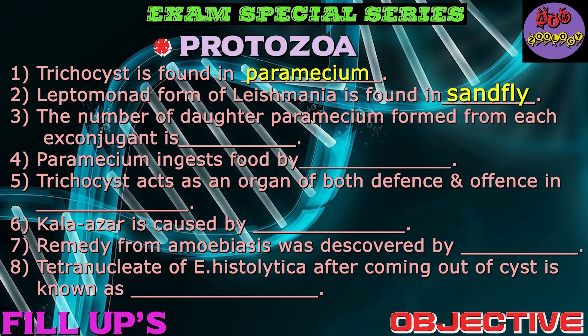Sandfly always comes with a zoological name — it is asked in the exam. What is Sandfly's zoological name? Phlebotomus argentipes. Question number three: The number of daughter paramecia formed from each exo-conjugant is? Correct answer is 4.